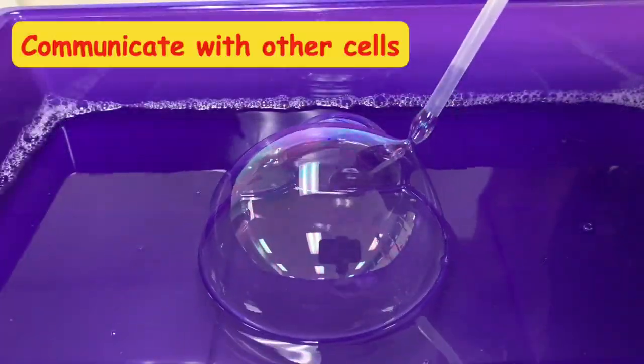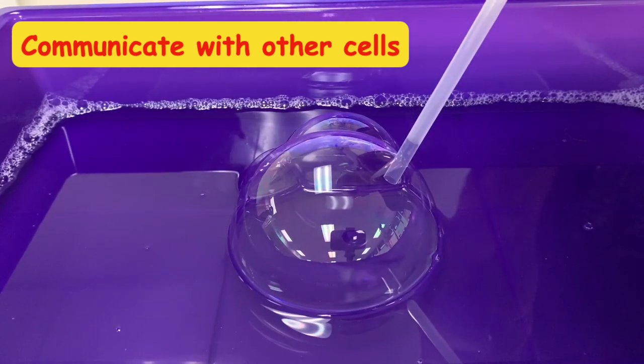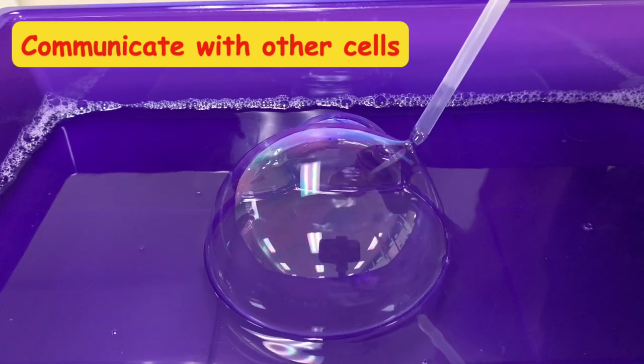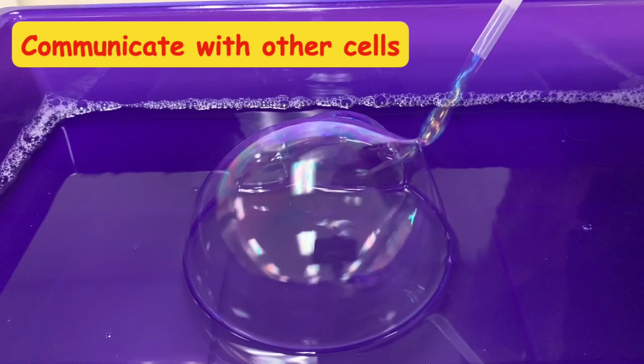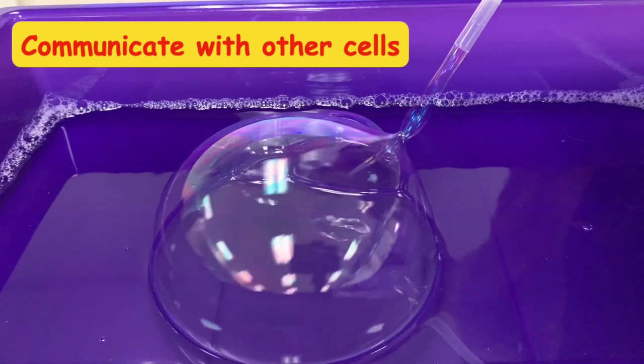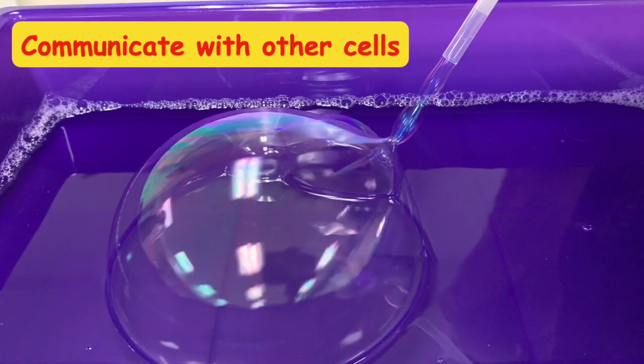In order to show that cells can communicate with other cells next to them, you can again start with one of those larger bubbles but continuously blow into the straw as you exit the bubble and you'll see a tunnel form between the bubble and your straw.